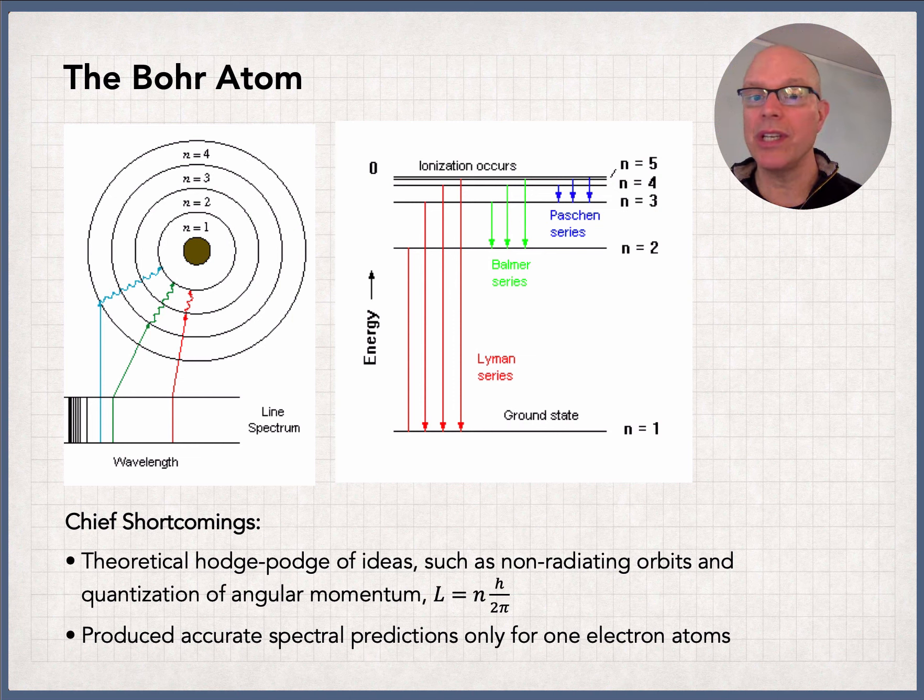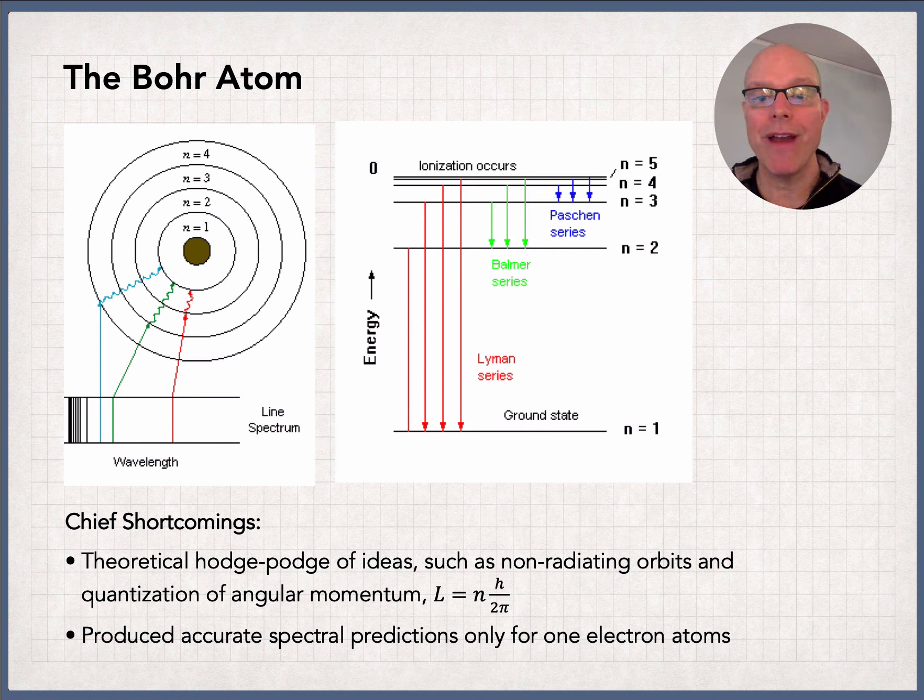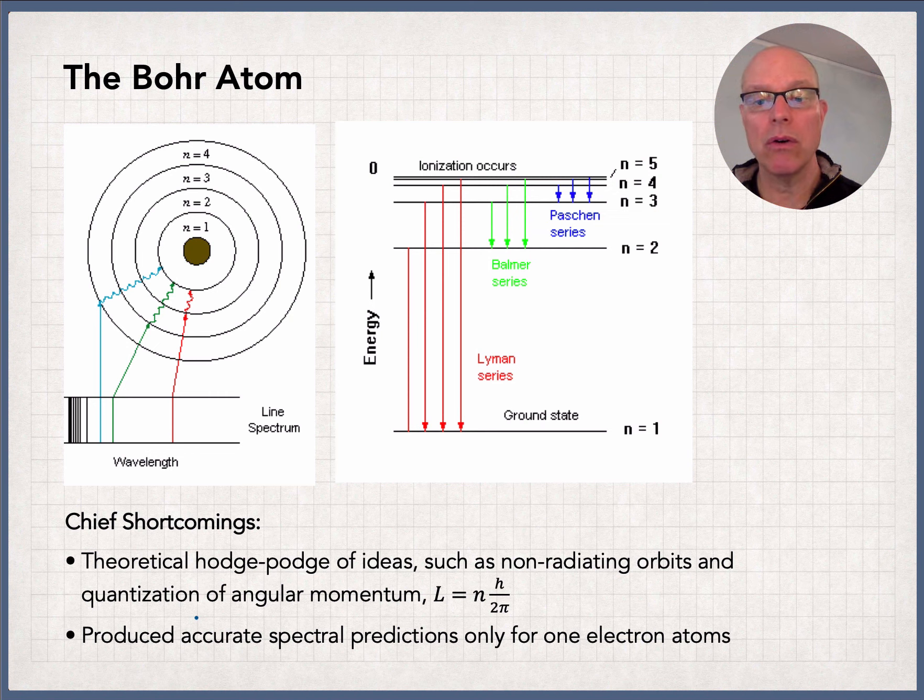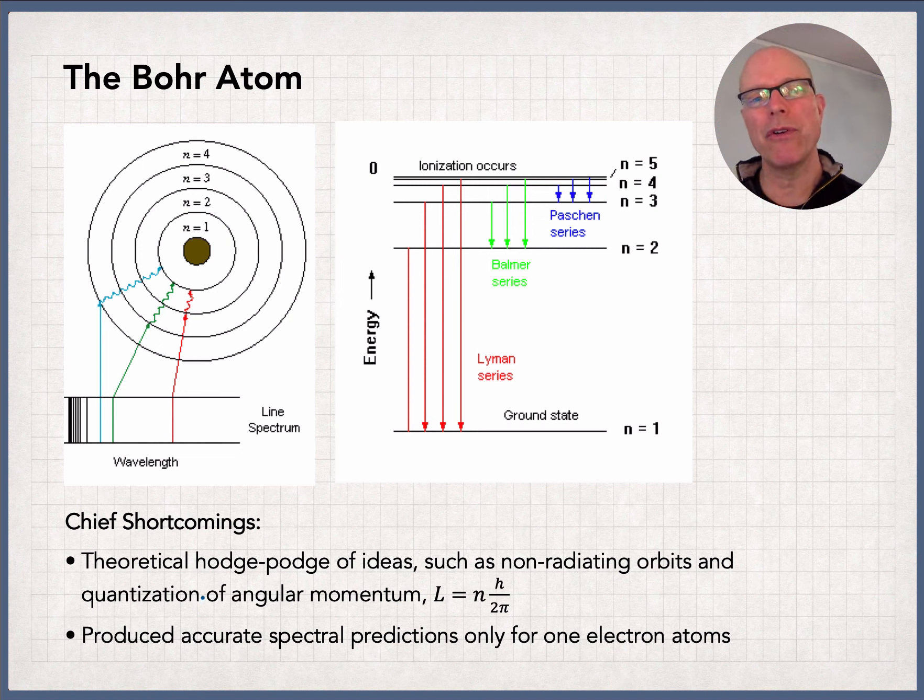What it didn't do was it didn't predict the spectra for any atoms that weren't hydrogen. The second bullet on this slide was that it only worked for helium with one electron or doubly ionized lithium. It only worked for one electron atoms, which is weird. But it did work perfectly for hydrogen, which is really intriguing. And the second thing was a philosophical problem.